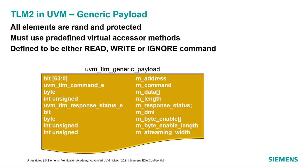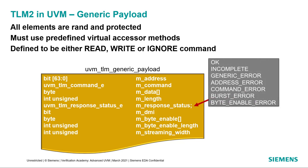The command field is an enum with one of three possible values: read, write, or ignore. The response status enum allows the target to update the transaction to indicate to the initiator what happened — whether it completed successfully or one of several other error conditions. The rest of the fields are pretty self-explanatory.